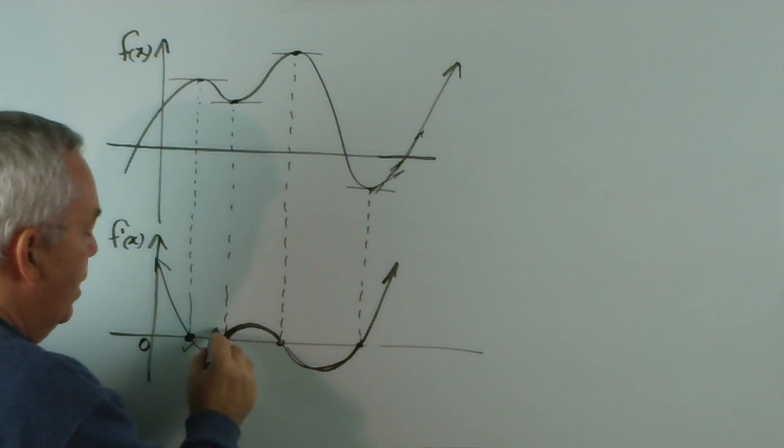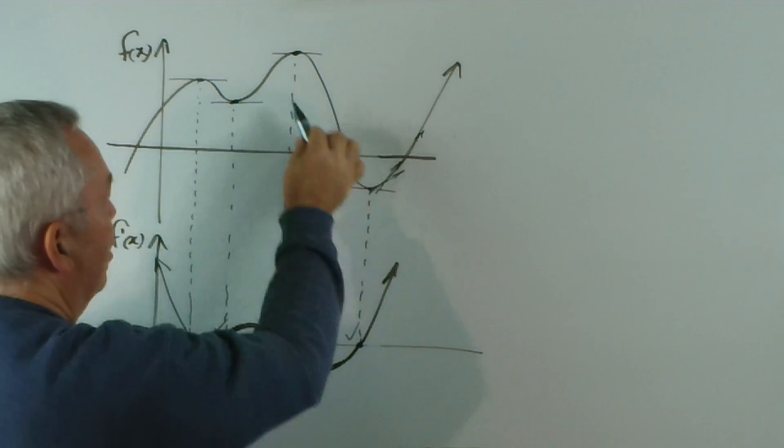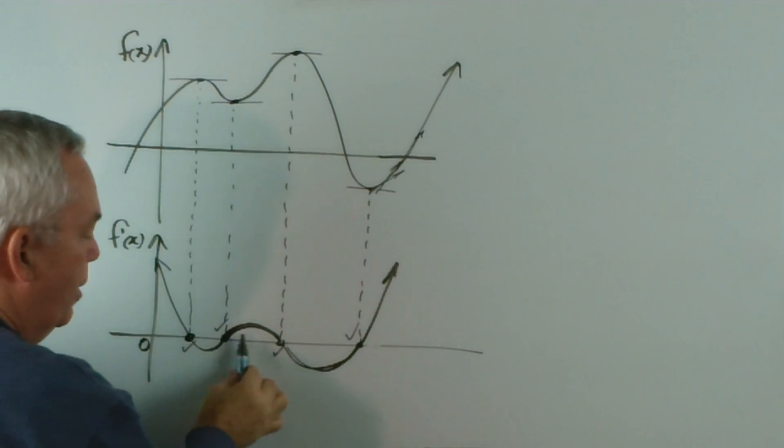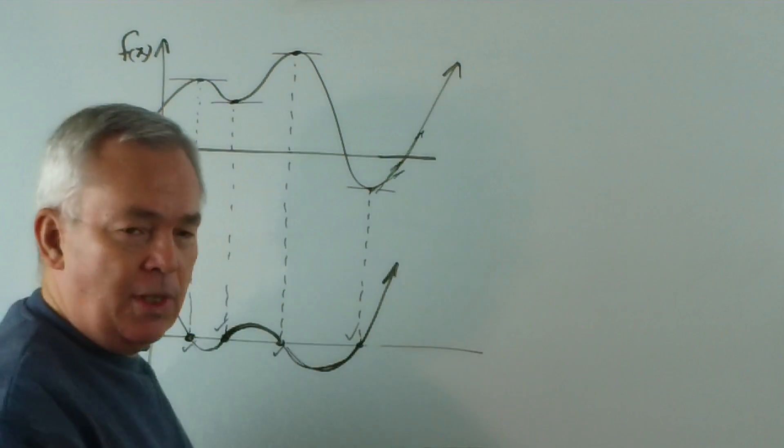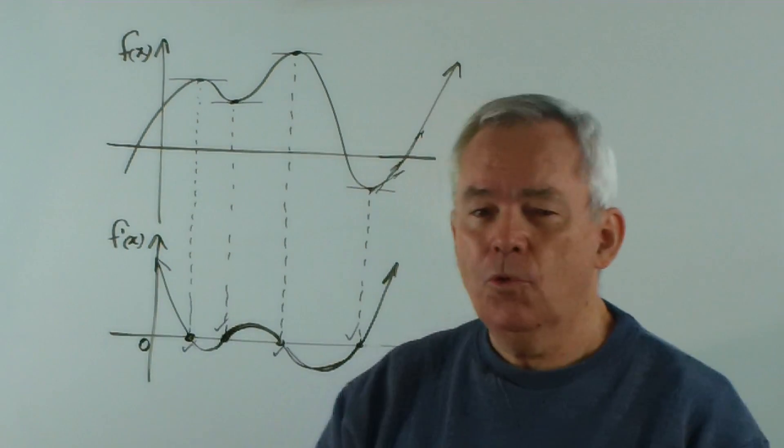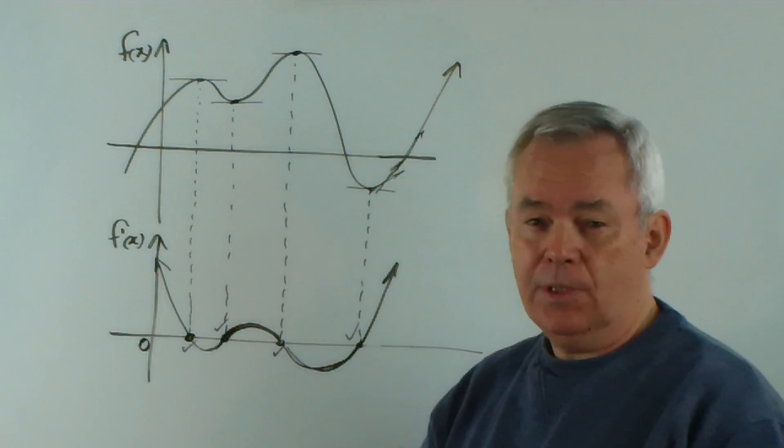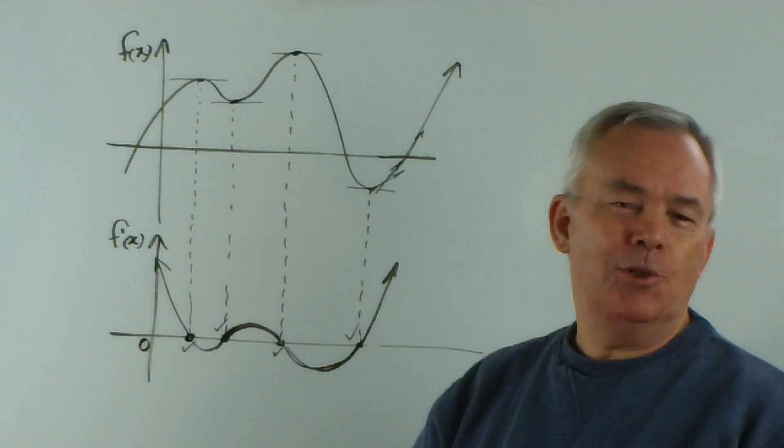These points we know for sure. There's no doubt these are horizontal tangents. No doubt they're zero gradients. But we don't know how far down this goes or how far up or how far down or what the shape is. There is a method for drawing it more accurately, if you're interested.